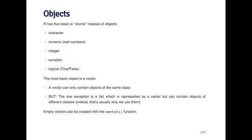R has five basic atomic classes of objects. So these are kind of the very low level or basic classes of objects. And they are character, numeric, so these are like real numbers or decimal numbers, integers, complex numbers, and logical. So logicals are just true, false type things.